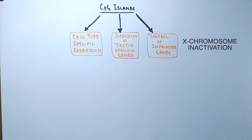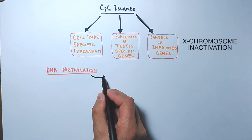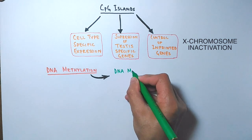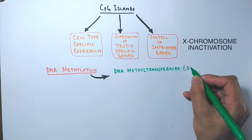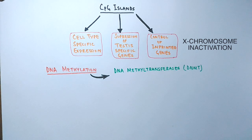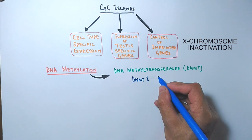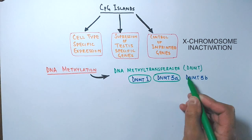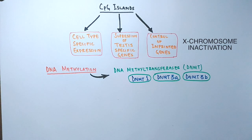CpG islands are prone to methylation, and these functions are regulated through DNA methylation aided by DNA methyltransferase enzymes. DNA methylation mostly targets cytosine bases. We have DNMT1, DNMT3A, and DNMT3B enzymes. DNMT1 is responsible for maintenance of DNA methylation, while DNMT3A and DNMT3B carry out both maintenance as well as de novo DNA methylation.